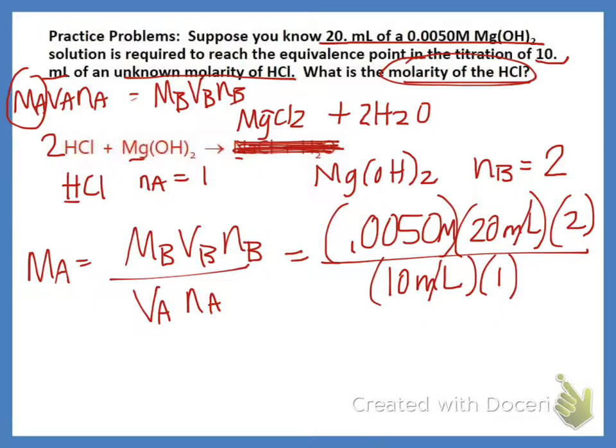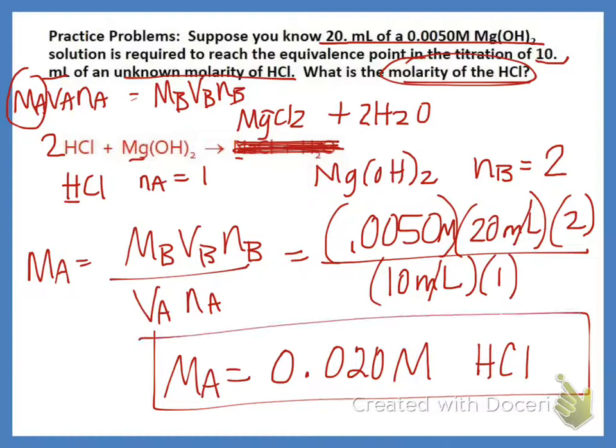We're going to get our answer for our molarity in two significant figures, because if we look back in the problem, it has two significant figures. So our answer would be 0.020M HCl. And you do have some left-side activities that you should try to work and see if you can use those formulas and get the correct answers. The left-side activities do have the answers there, so you know if you do it correctly. And that ends this lesson and the notes for this unit.